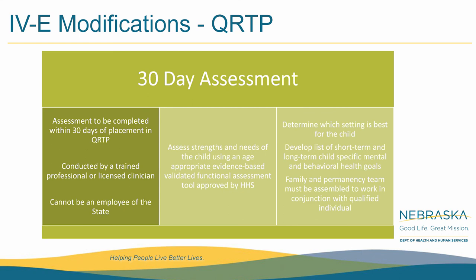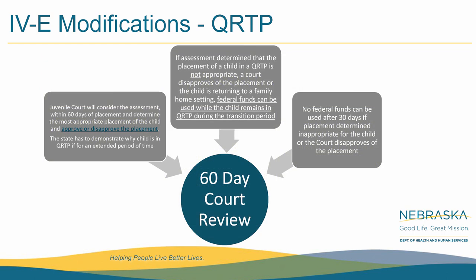The assessment must specify in writing the reasons why the child's needs cannot be met by the family or in a foster home — shortage of foster family homes is not an acceptable reason for this placement. If the assessor recommends a QRTP, it must be stated why it is the most effective and appropriate level of care in the least restrictive environment. Within 60 days of the QRTP placement, a court must consider the required 30-day assessment, determine whether the child's needs can be met in a foster family home, or if not, whether the QRTP provides the most effective and appropriate level of care. The court must determine if the placement is consistent with short and long-term goals, approve or disapprove the placement, document such approval in the case plan, and note that a QRTP does not qualify as a permanency option.